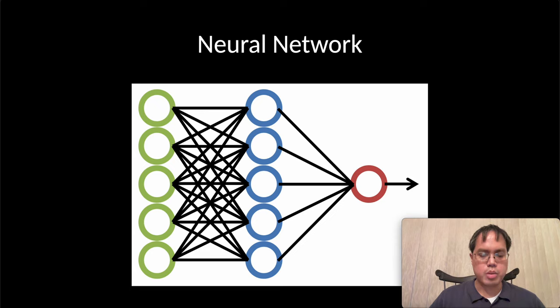This is a graph of a machine learning model known as a neural network. We can divide this into three layers: an input layer, a hidden layer, and an output layer.